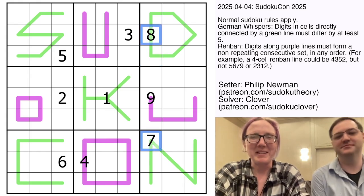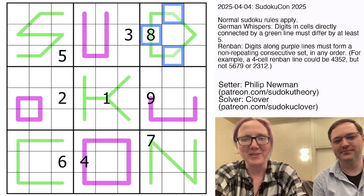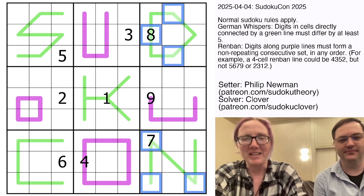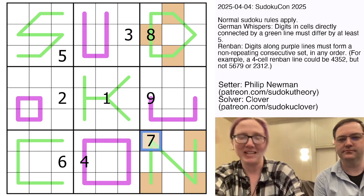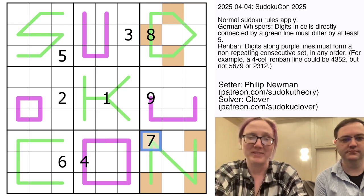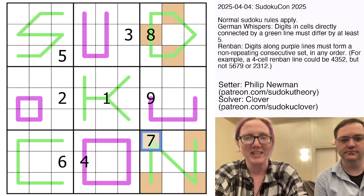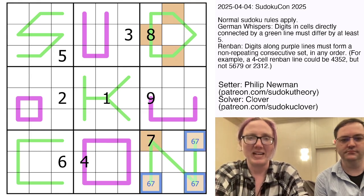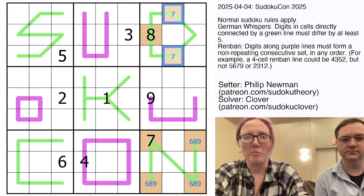I'm going to start by being extremely diligent and doing high-low coloring with the German Whispers. Whenever two adjacent digits have to have a difference of five or more, you flip back and forth between high-low because high digits are only five away from low digits. High digits are six, seven, eight, nine. Low digits are one, two, three, four.